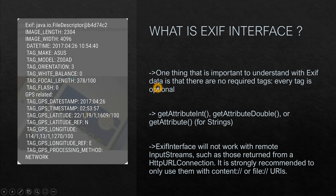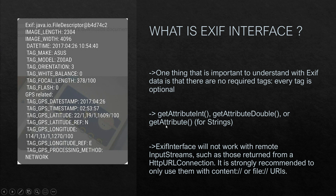One important thing to understand with EXIF data is that there are no required tags — every tag is optional. Based on your requirements you can customize those tags. A few of the key functions we use are: getAttribute int to retrieve an integer value from a tag, getAttribute double to retrieve a double value, and getAttribute for strings.